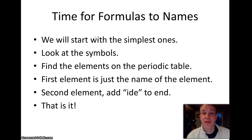Okay. Time for formulas to names. These are really easy. All you need is your periodic table. We'll start with the simplest ones. Just look for the symbols on the periodic table. You find the elements. The first element is just the name of that element as written on your periodic table. The second element is going to be the name of that element with the I-D-E ending. That's all there is to it.